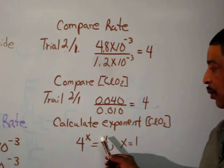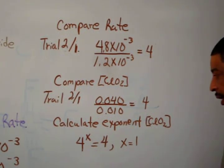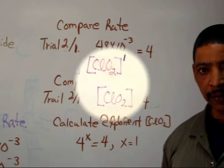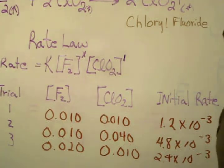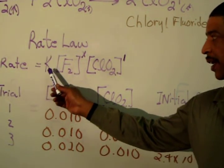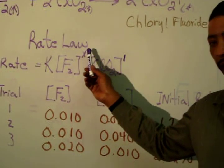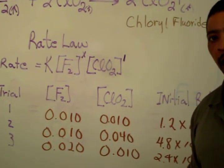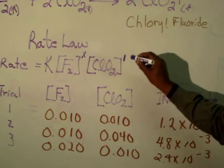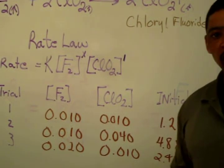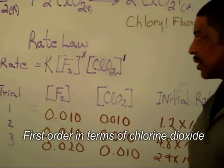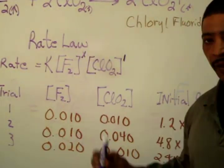4 to the x equals 4. Therefore, x is equal to 1. Any number raised to the first power will equal that number. Now, return to the original rate law, where rate was equal to k times the concentration of chlorine gas raised to some power, times the concentration of chlorine dioxide raised to some power. We may now replace that exponent with 1. This reaction is first order in terms of chlorine dioxide.